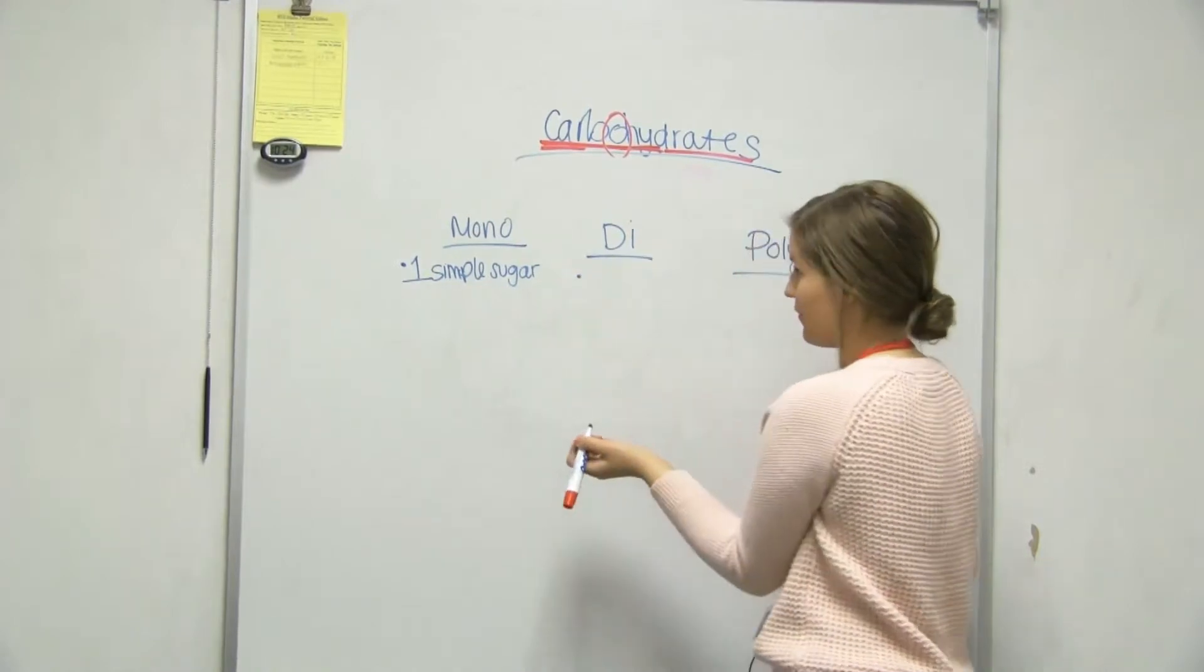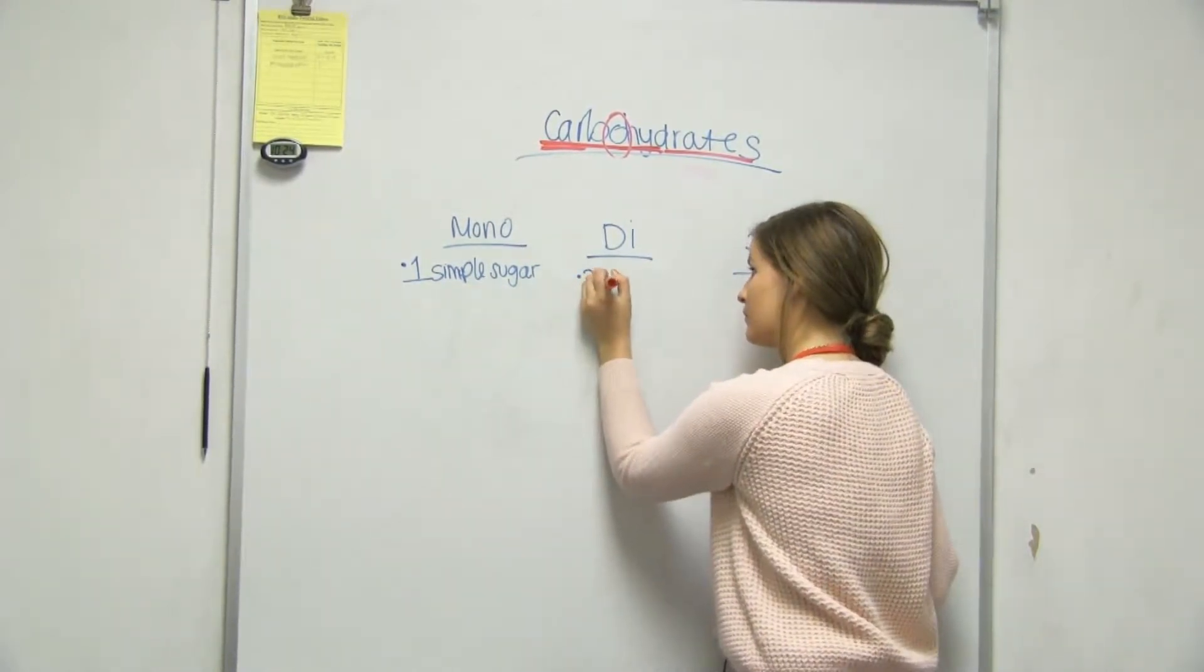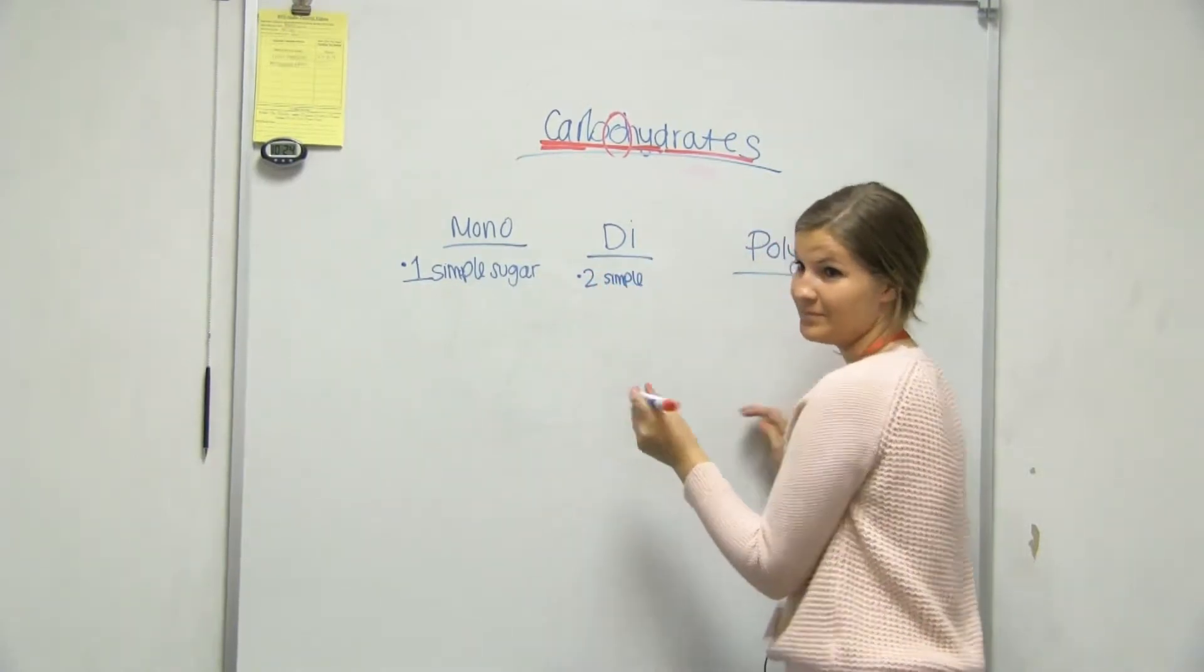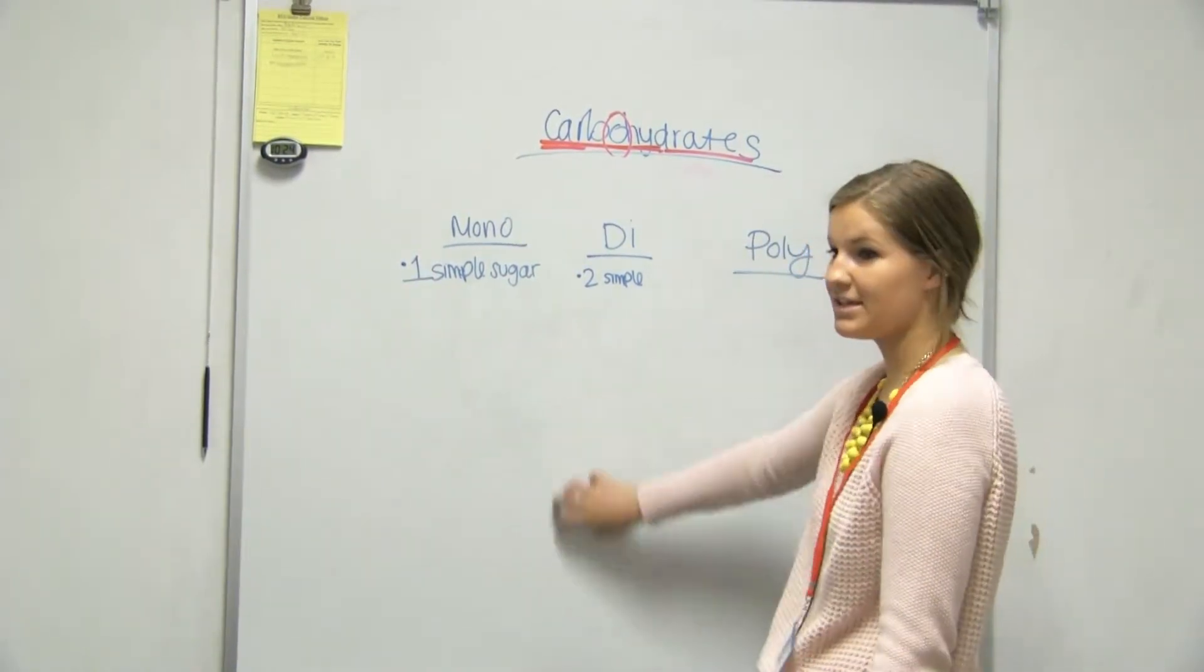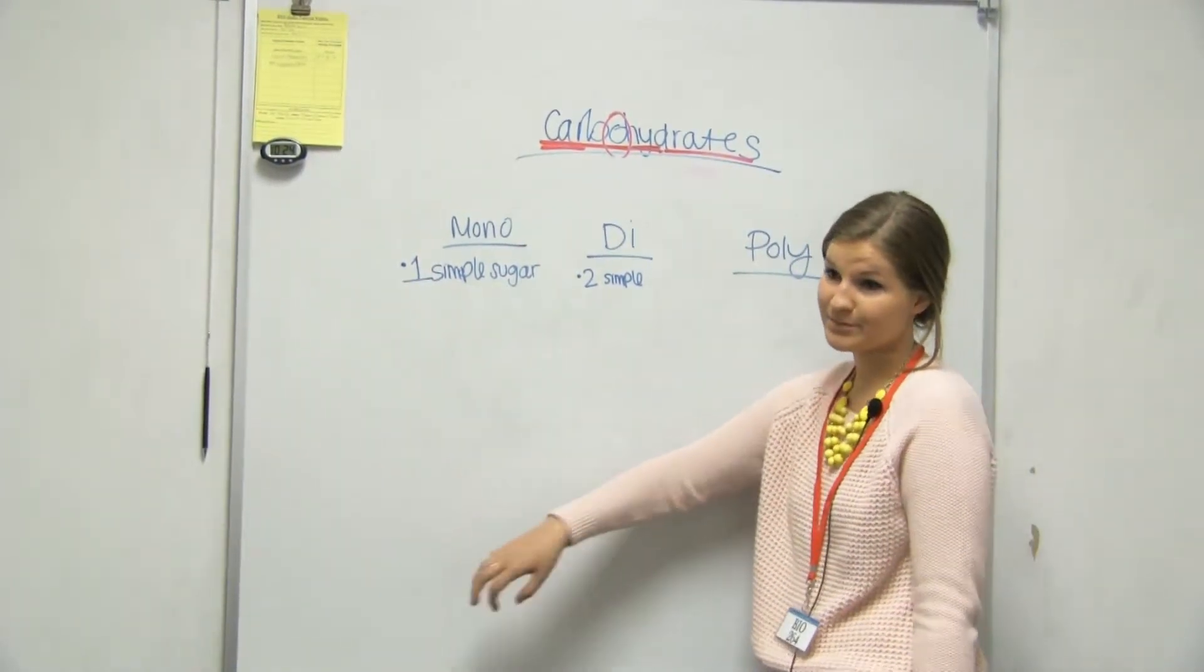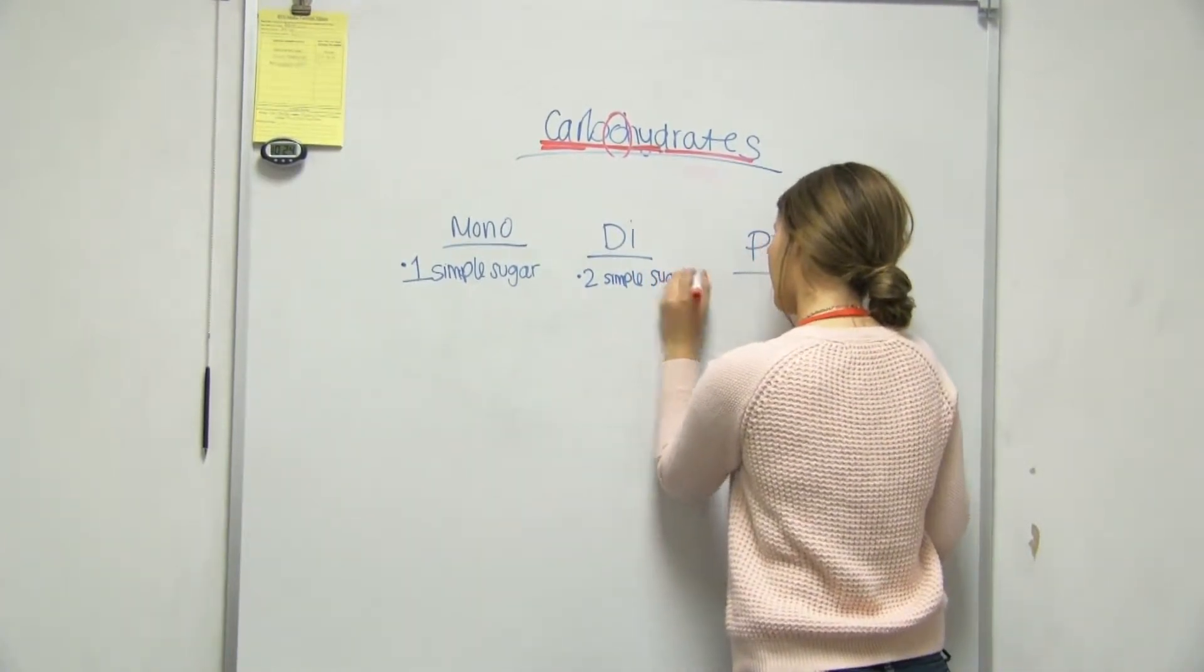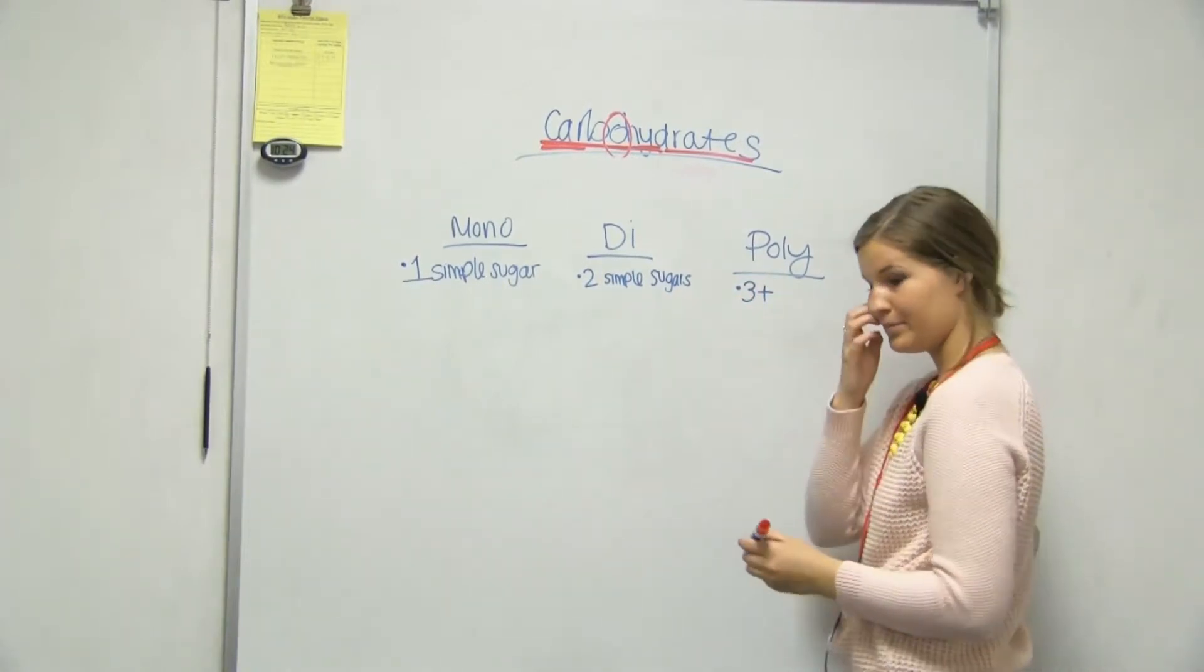And then di would be how many simple sugars? Two. Are they two, can they be two of the same, or do they have to be two different? Yeah, they can be two of the same. In a second class, that would be two different. No, they can be the same, because when you come to maltose, which is one of these, that's just two glucose. Okay. That's confusing, right?